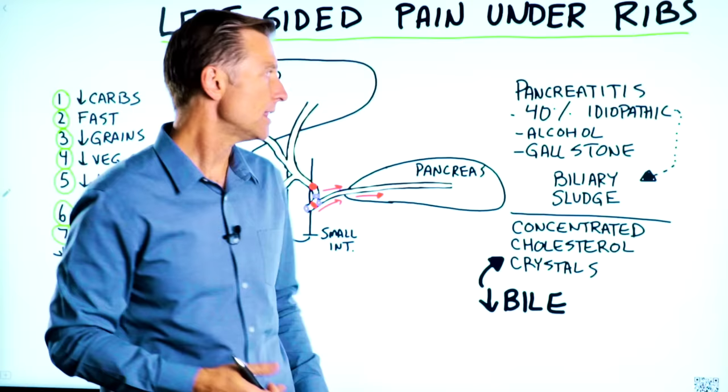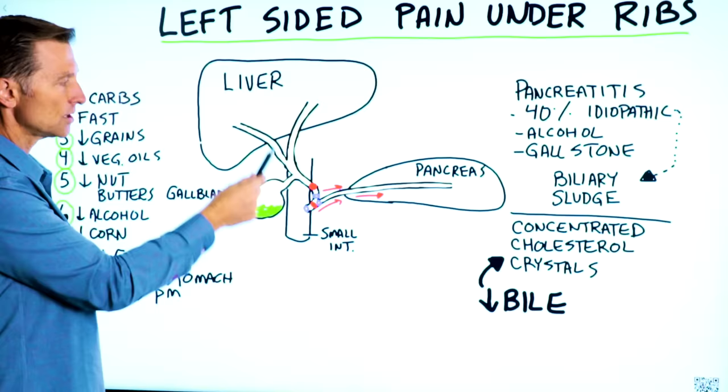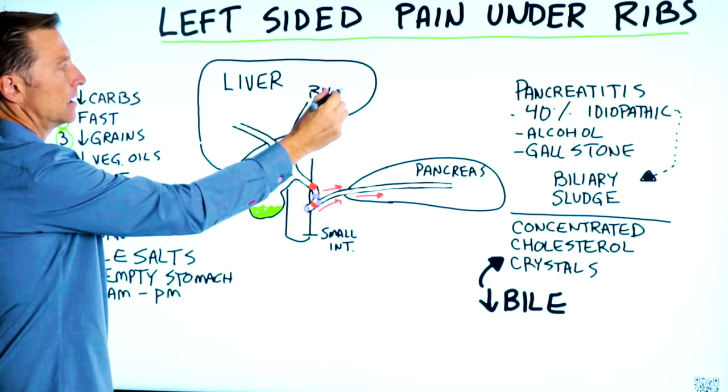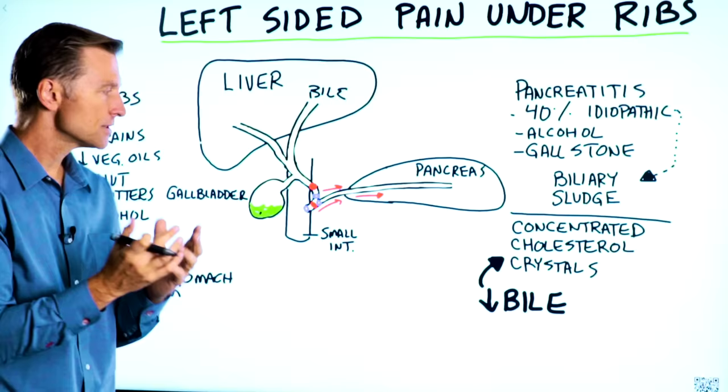You have the liver here, and you have the pancreas here. Your liver is right here, and your pancreas is on the left side. You have the gallbladder on the right side, and then you have all these little tubes that help drain bile. Bile is made in your liver, it drains through these little tubes called ducts, and most of it gets stored in the gallbladder and it's concentrated by five to seven times. So then when you eat, it gets contracted and it squeezes out through here into your small intestine.